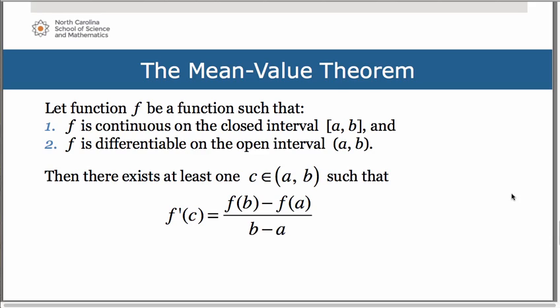What the mean value theorem tells us then is that there will exist at least one c value in the open interval from a to b such that the derivative at c, the slope of the tangent line at c, will equal the slope of the secant line connecting the endpoints. This was proven by the French mathematician Joseph-Louis Lagrange and it's used mostly to prove other theorems in calculus. Some consider it the most important theorem in calculus and it is closely related to the fundamental theorem of calculus that you'll learn later on.